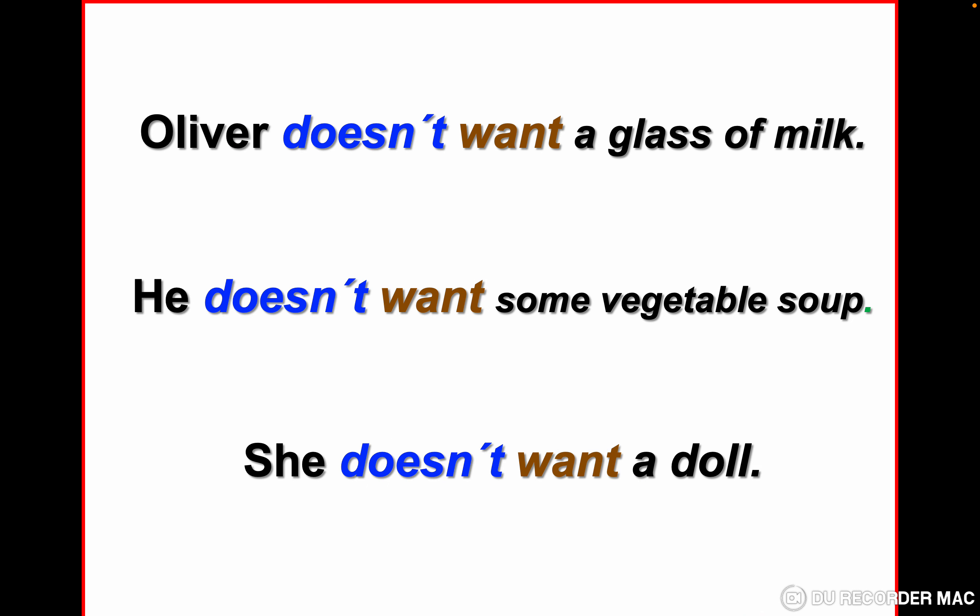Let's go to the negative form. Oliver doesn't want a glass of milk. He doesn't want some vegetable soup. She doesn't want a doll. Let's repeat: Oliver doesn't want a glass of milk. He doesn't want some vegetable soup. She doesn't want a doll.